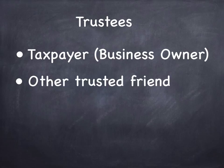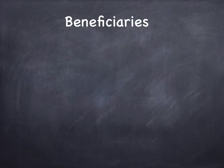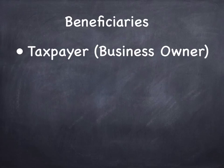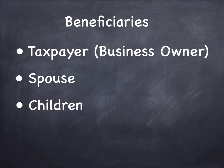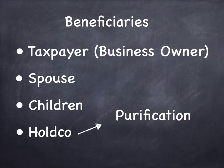You want more than one trustee to maintain continuity should something happen to the business owner. The beneficiaries are the taxpayer, a spouse if there's one involved, children if they're involved, and usually the holdco is also named as a beneficiary for the purposes of purification — and we're going to see how that works very soon.